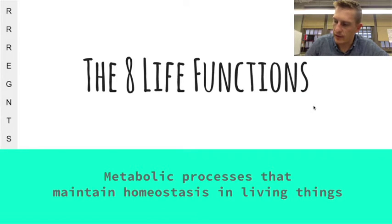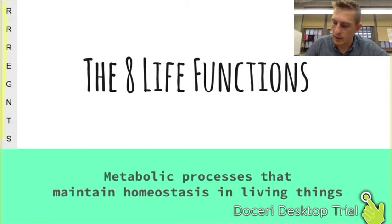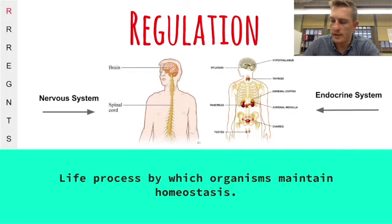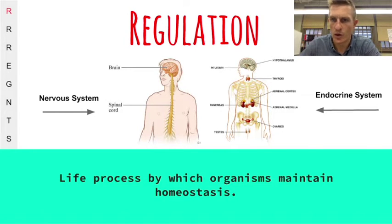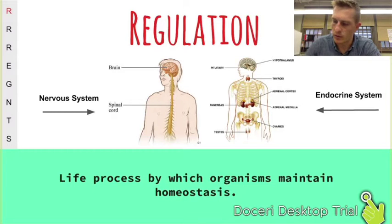The eight life functions — if you can describe all of these metabolic processes, you will very easily be able to pass the Regents exam. Regulation is the process by which all organisms maintain homeostasis, where we respond to stimuli in our environment. In multicellular organisms, this is accomplished by the nervous system and the endocrine system.